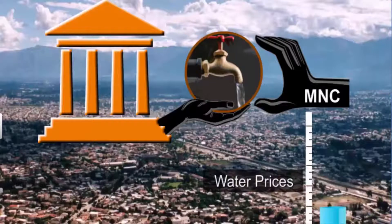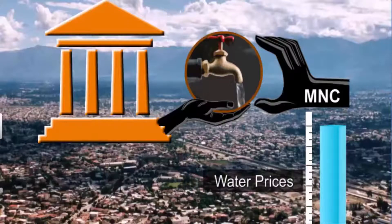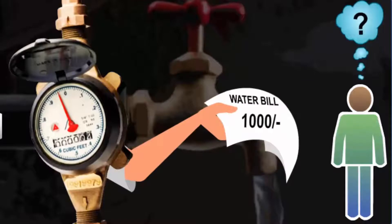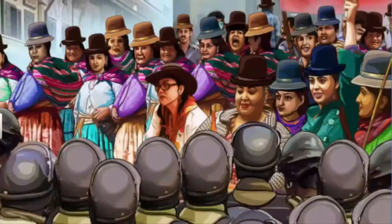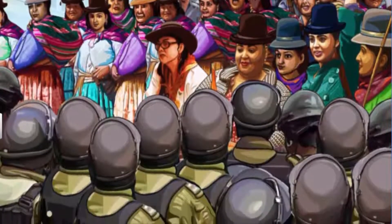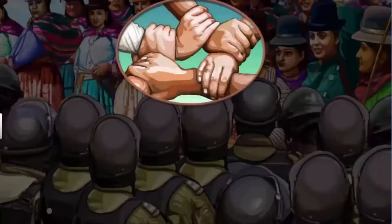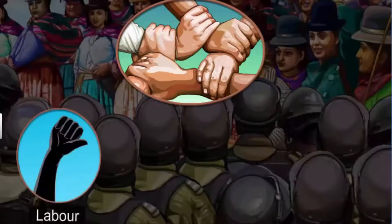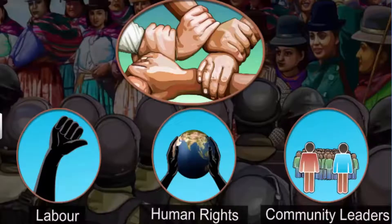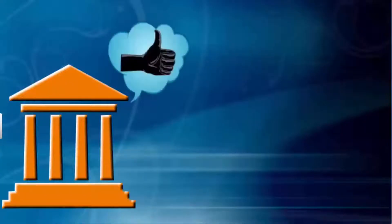The government sold the water rights for the city of Cochabamba to a multinational company, who immediately increased the price of water by four times. People started to receive monthly water bills of 1,000 in a country where the average income is about 5,000 a month. This movement successfully organized a four-day general strike in the city. Mass scale protests started and a new alliance of labor, human rights and community leaders was formed in January 2000.